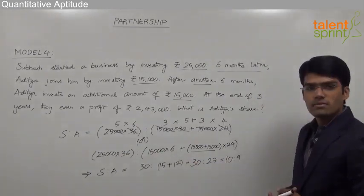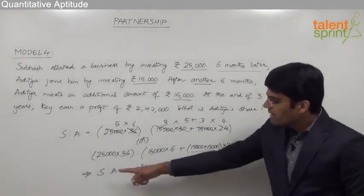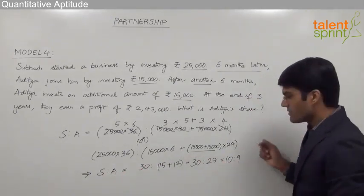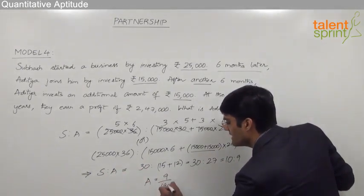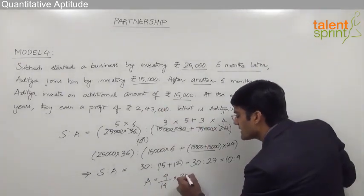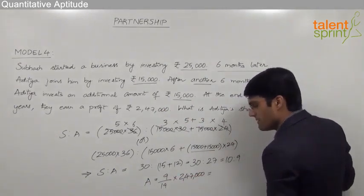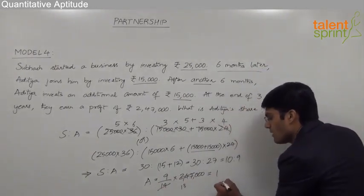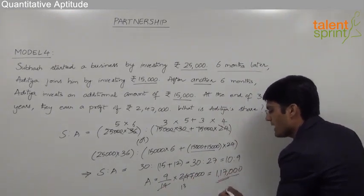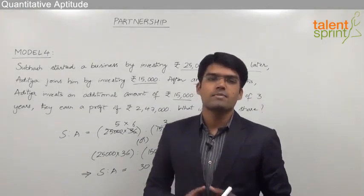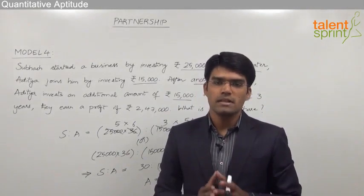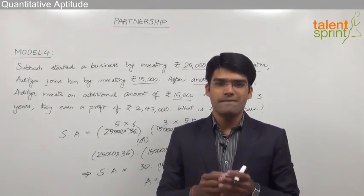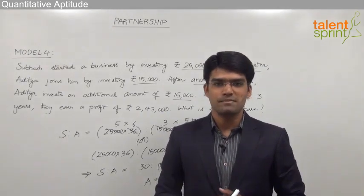In both methods the ratio is 10 is to 9. The share of Subhash to Aditya is 10:9, meaning out of a total of 19 parts, Aditya gets 9 parts. So Aditya's profit equals 9 out of 19 multiplied by total profit of 2,47,000. Since 19 × 13 = 247 and 9 × 13 = 117, Aditya's profit is 1,17,000. The concept across all partnership questions remains the same: profit or loss of a partner is proportional to the product of investment and time of investment.